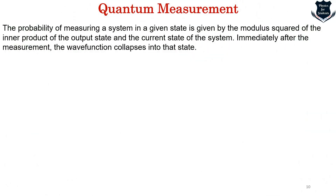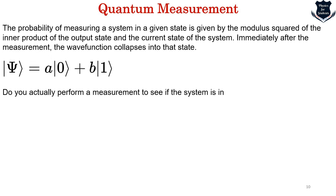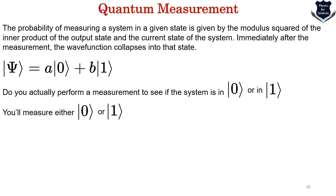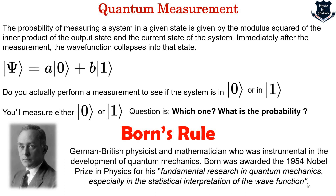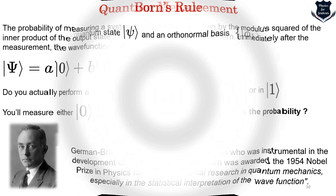One of the postulates of quantum mechanics states: the probability of measuring a system in a given state is given by the modulus squared of the inner product of the output state and the current state of the system — this is called Born's rule. Immediately after the measurement, the wave function collapses into that state. The question is: which state will we measure, and what is the probability? Here comes Born's rule, named after the famous German-British mathematician Max Born, who won the Nobel Prize in physics for his statistical interpretation of the wave function.